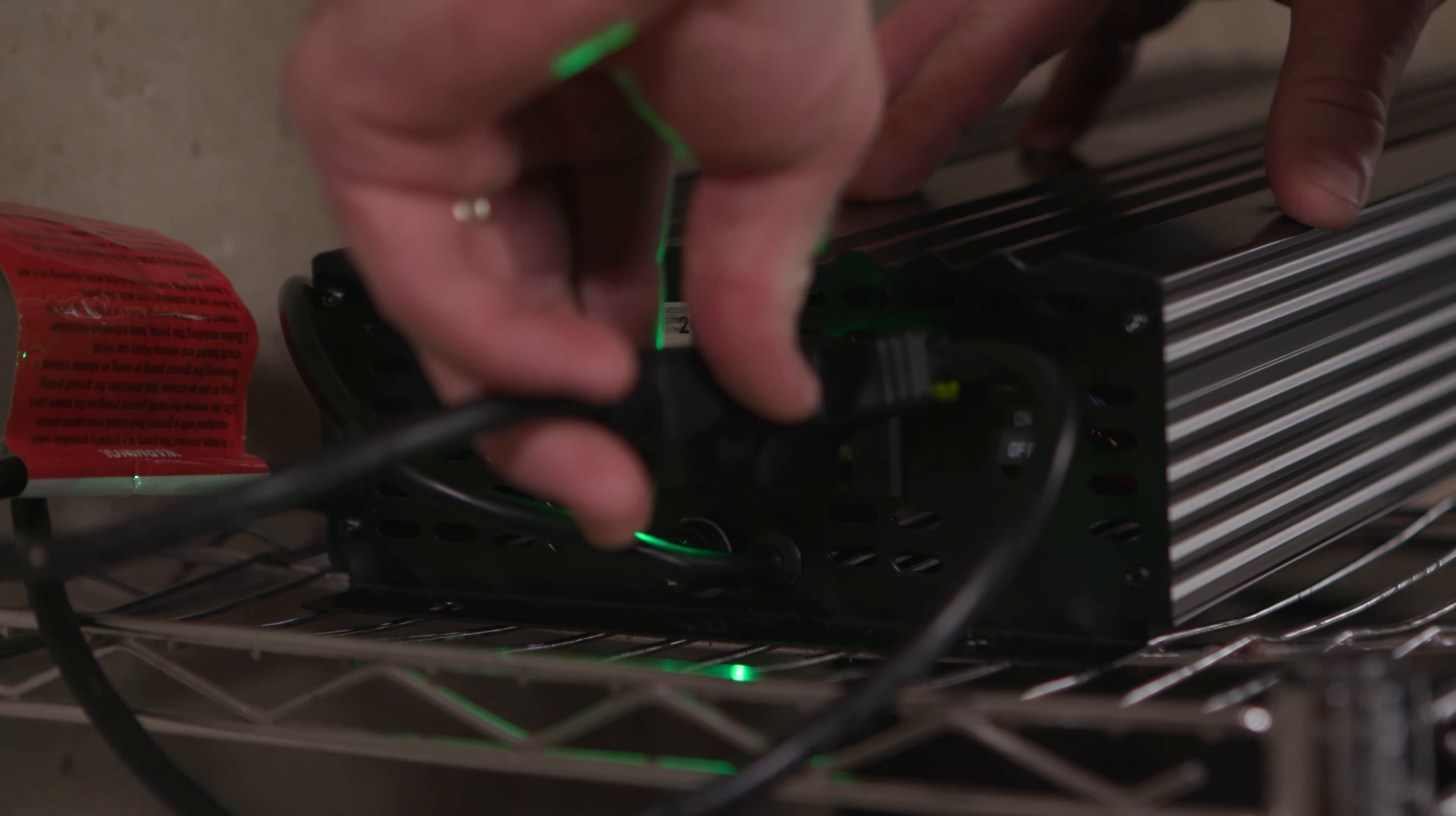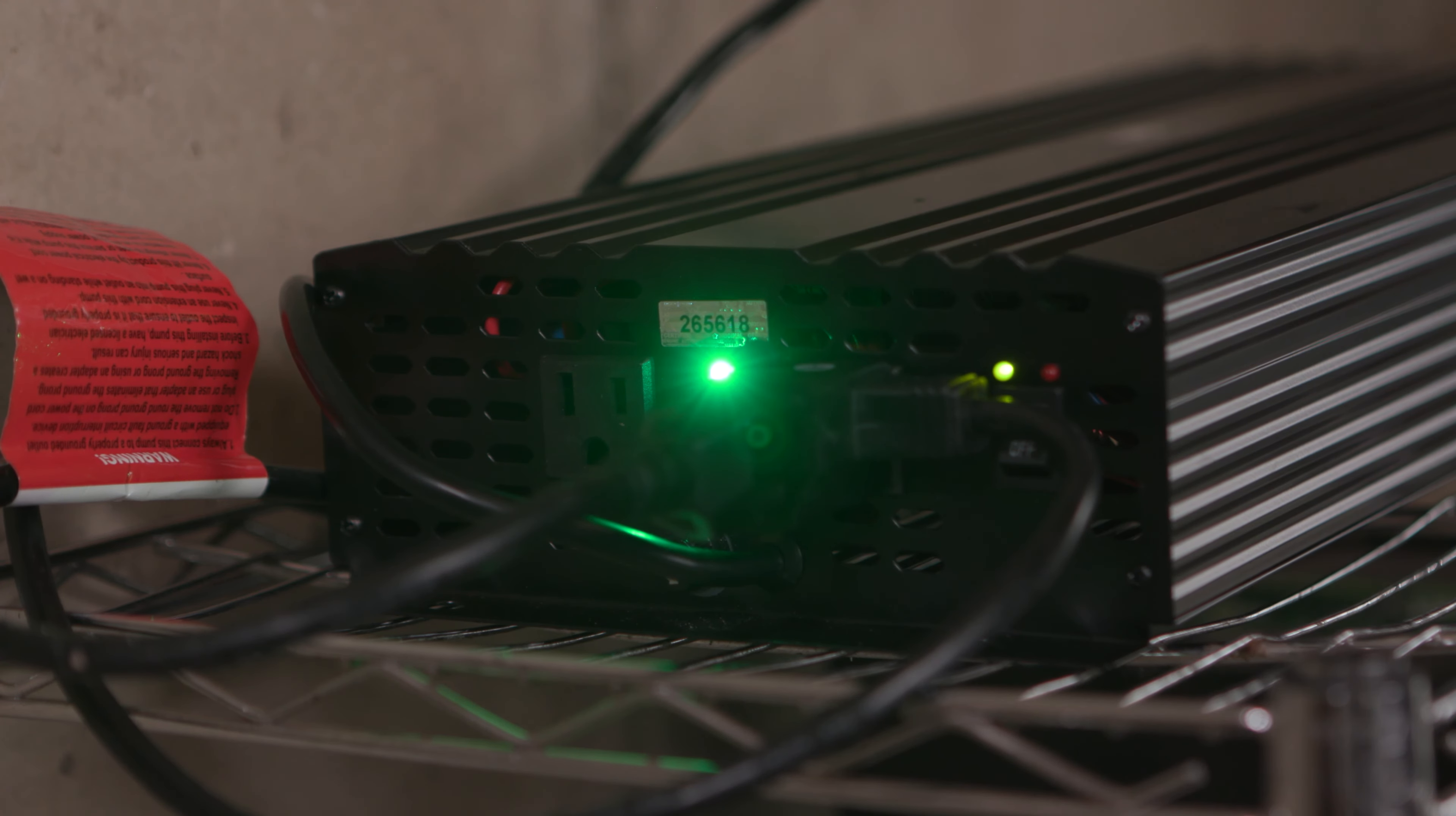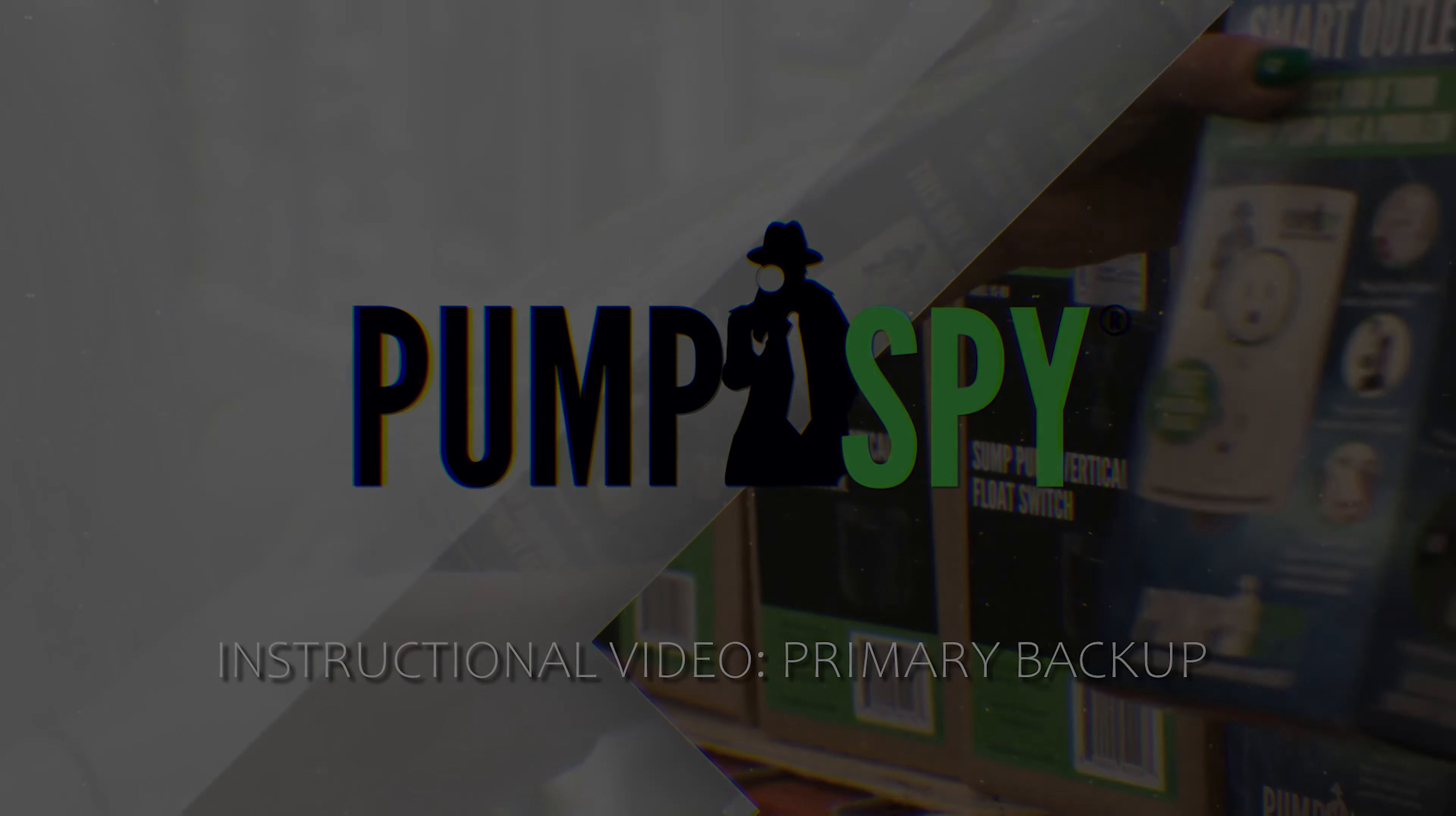Flip both the power and charger switches into the on position. Then, plug your sump pump and any applicable float switch into one of the outlets on the backup power system. Your primary sump pump will now continue to operate during a power outage.